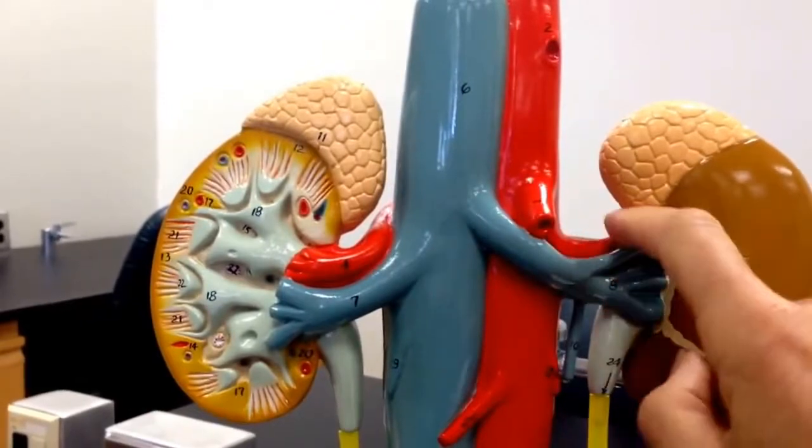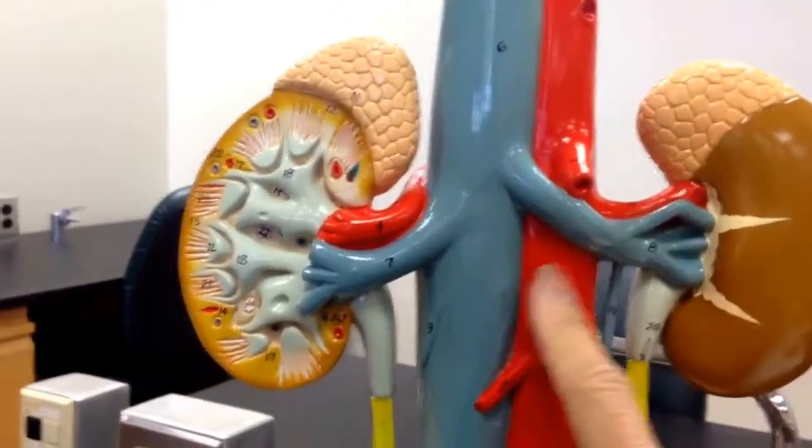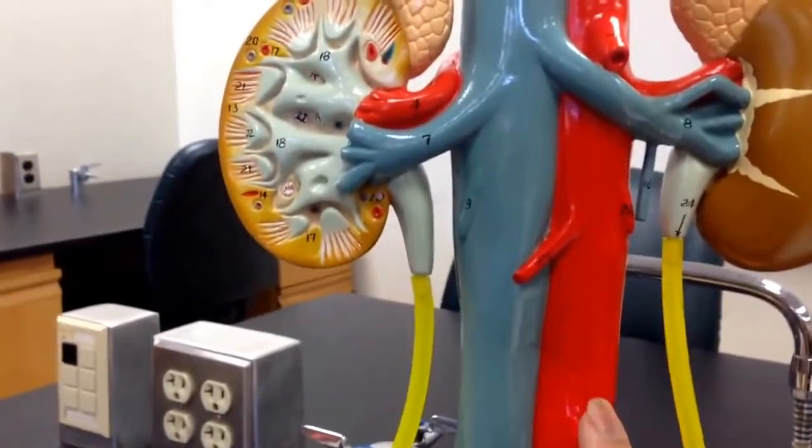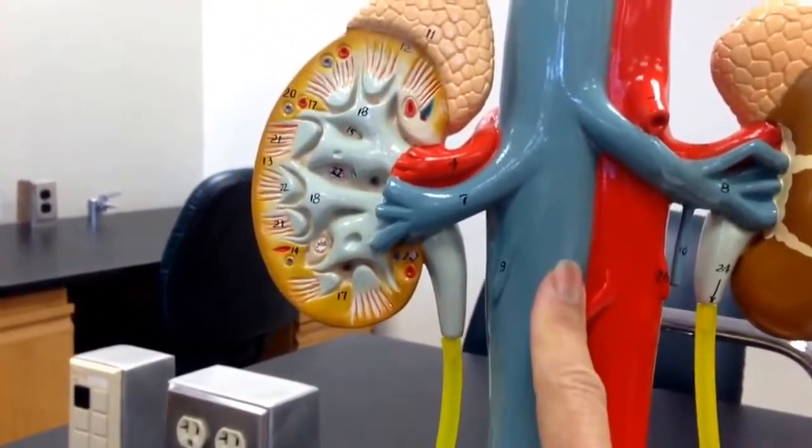Leading into the kidney we have the renal artery and the renal vein coming off of the aorta and feeding into the inferior vena cava.